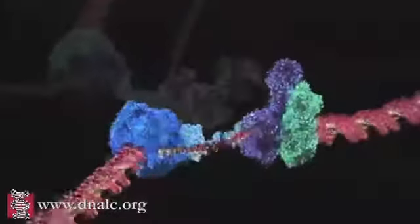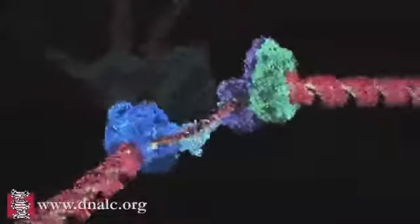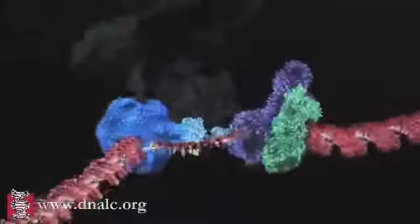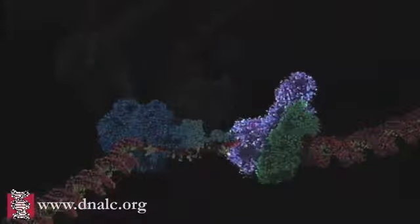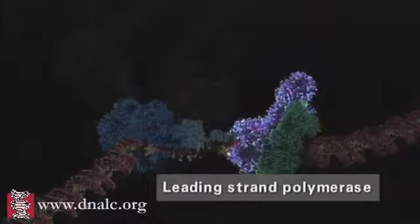The 3' DNA strand, also known as the leading strand, is diverted to a DNA polymerase and is used as a continuous template for the synthesis of the first daughter DNA helix.